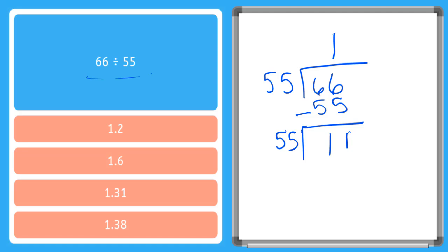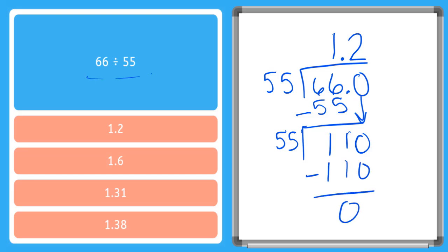So how many times does 55 go into 11? Less than 1. So we're going to put a decimal point here and a 0. Remember, when we put a decimal point in our dividend we have to put it right above it in our answer line too. Then we bring this 0 down. Now 55 goes into 110 how many times? 55 times 2 is 110, so we put our 2 up here. 2 times 55 is 110 — subtracting gives us 0. So our answer is 1.2.